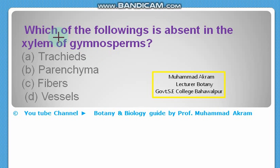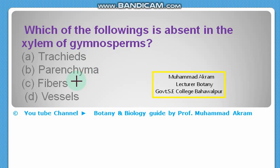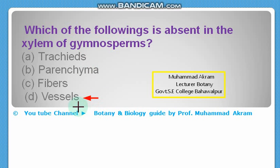A very important MCQ: which of the following is absent in xylem of gymnosperms? Tracheids? No, tracheids are present. Parenchyma? Also found. Fibers? Also found. Vessels are absent in xylem of gymnosperms. This is a very important MCQ.